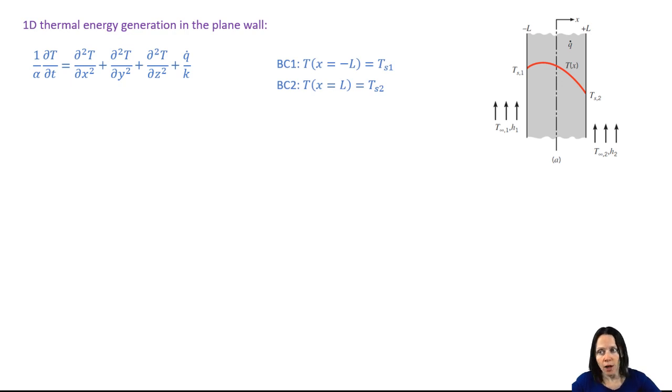Now you might not know the surface temperature. Maybe you only know the convective conditions on either side. That could be your boundary condition. But we'll solve for the specific case of knowing the surface temperatures.